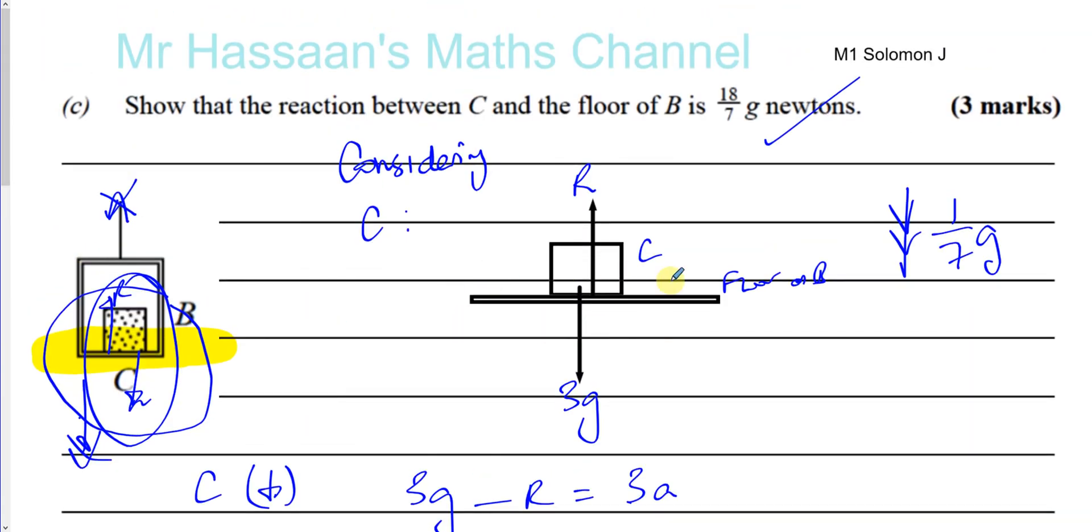I hope that's clear. A lot of people are unclear of this kind of problem. You know, they're wondering what happened to the tension, what happened to the weight of B. But we're just considering this section alone and thinking what are the forces acting on C alone. So the reaction between C and the floor of B is going to be 18 over 7. That's the R over there. All right, so that's how to deal with such questions. Thank you for watching.